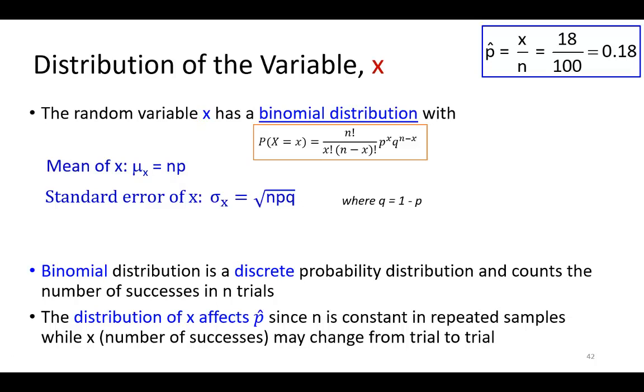The mean of the binomial variable x is going to be n times p, where n is the sample size and p is the probability of success, as it were. And the standard deviation is going to be the square root of npq, where q is 1 minus p. Bear in mind, if you get rid of this radical sign, you're calculating the variance of the binomial variable x.